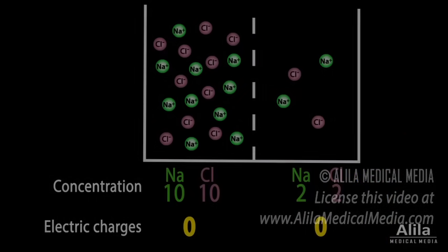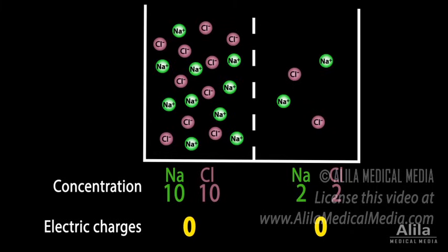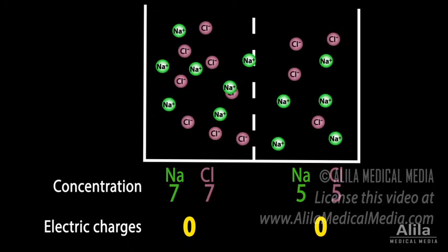Consider this example. Two solutions of different concentrations of sodium chloride are separated by a membrane. If the membrane is equally permeable to both sodium and chloride, both ions will diffuse from higher to lower concentration and the two solutions will eventually have the same concentration. Note that the electric charges remain the same on both sides and membrane potential is zero.